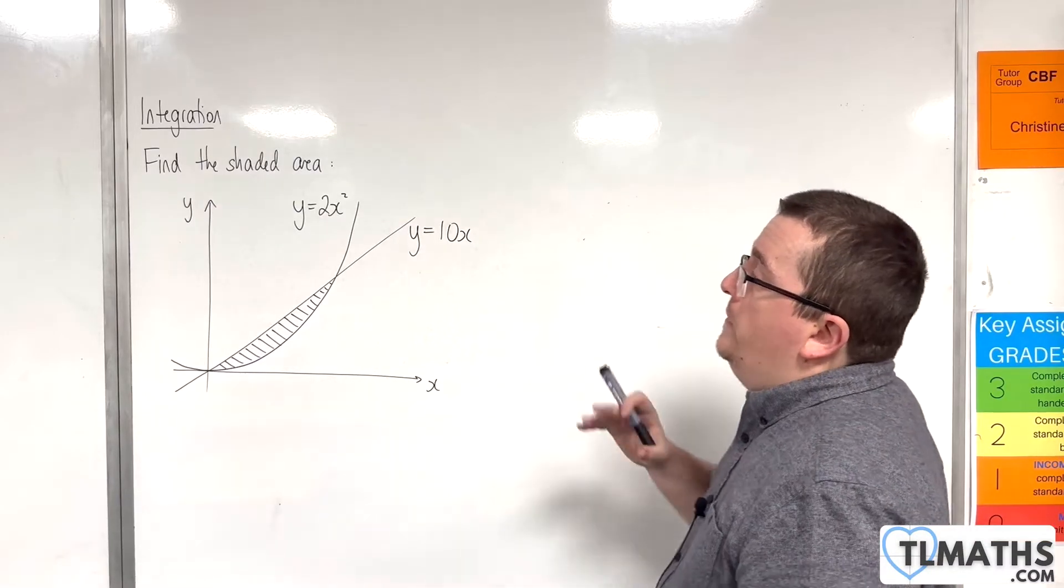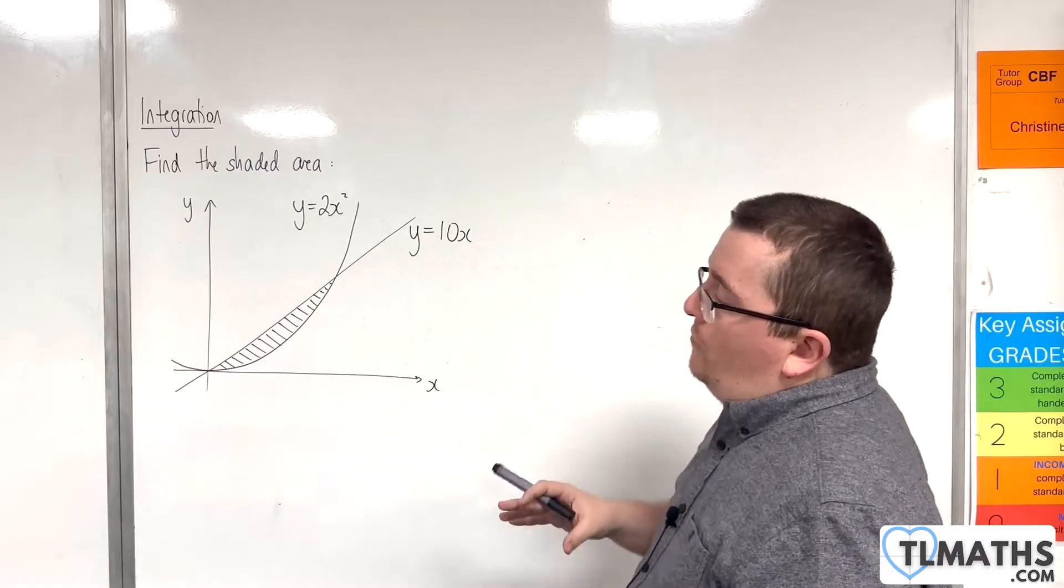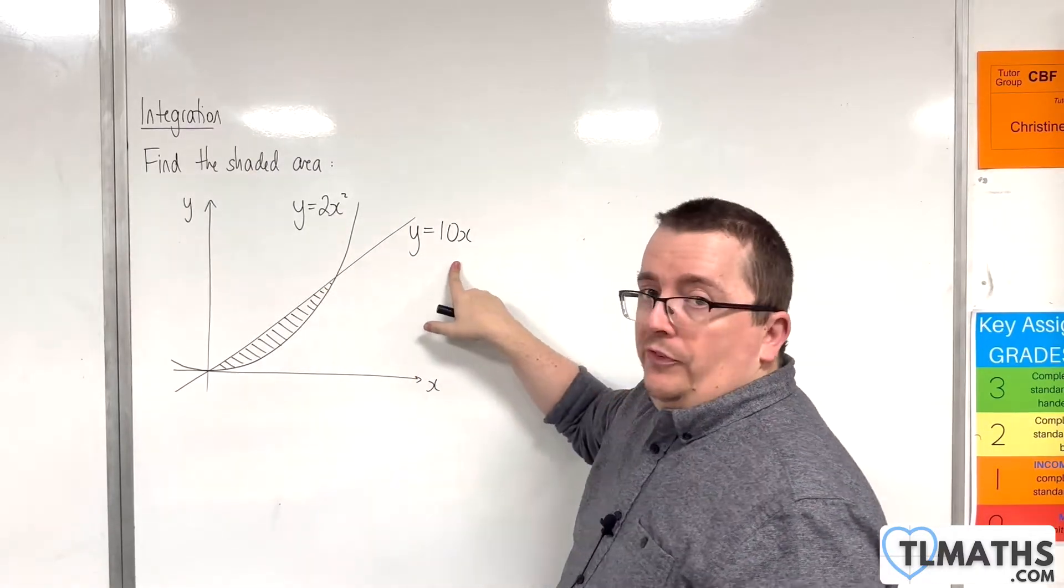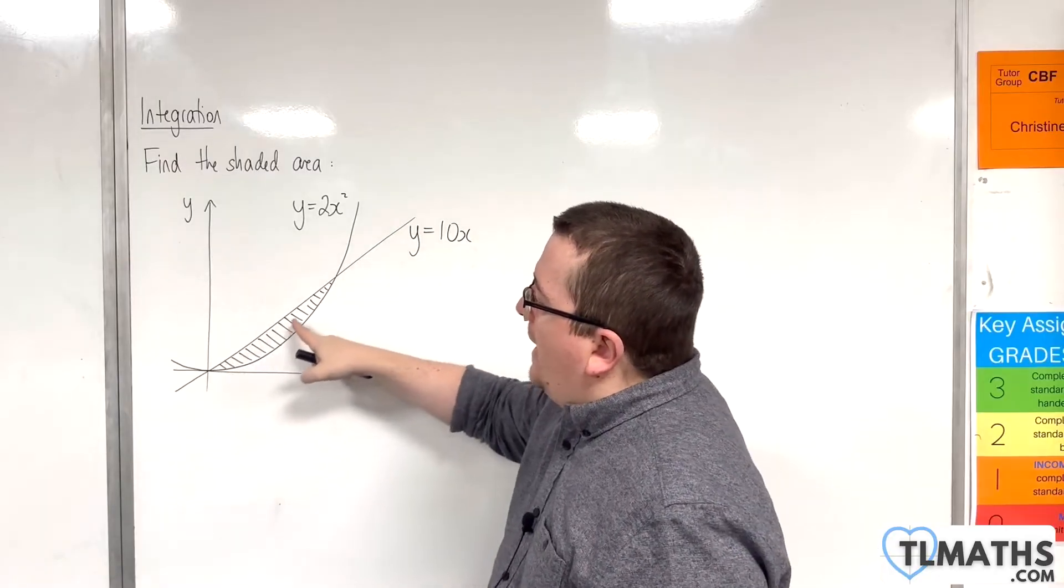So in this video we're going to find the shaded area that is trapped between y equals 2x squared and y equals 10x. So this shaded area here.